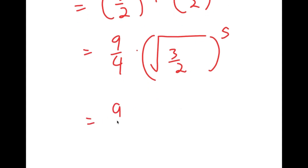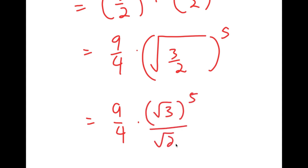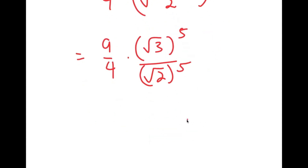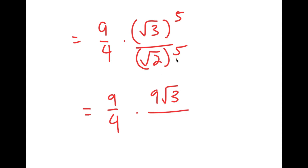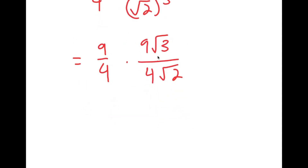This equals 9/4 times the square root of 3 to the power of 5 over the square root of 2 to the power of 5. The square root of 3 to the power of 5 is equal to 9 root 3 — you can get this by multiplying the square root of 3 five times. And the square root of 2 to the power of 5 is equal to 4 root 2. So I have 9/4 times 9 root 3 over 4 root 2, which equals 81 root 3 over 16 root 2.